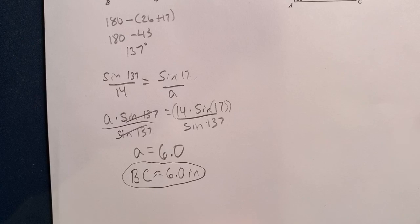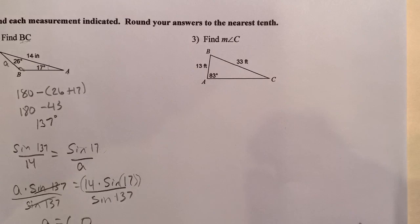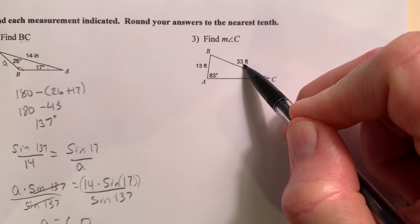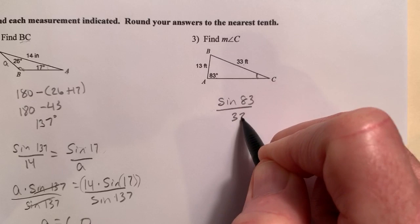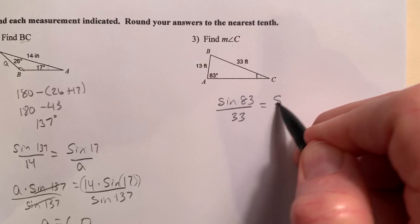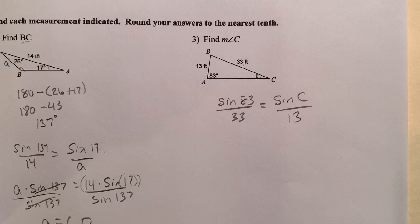Looking at this one. Now we're going to try to find the angle. Again, I know I'm going to use Law of Sines here because I have an angle and a side opposite angle. So that's a ratio I need to have. So I'm going to go ahead and write that. And this is my unknown. So I'm going to go sine of 83 degrees over 33, that's a ratio, equals, and then they want me to find the measure of angle C. So sine of C over the side opposite of angle C is 13.